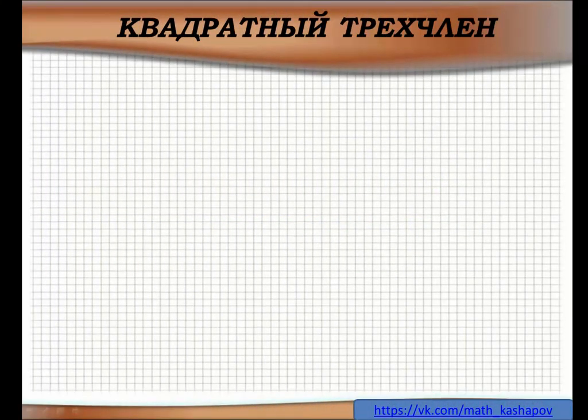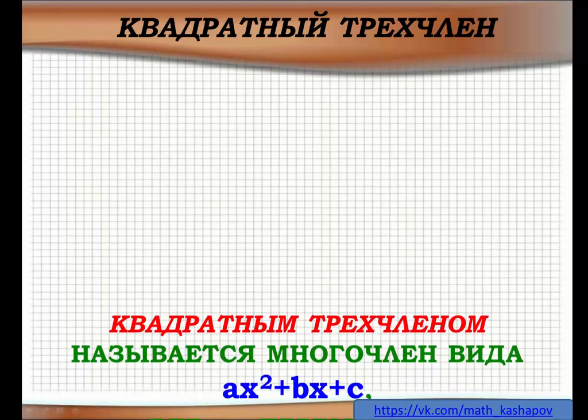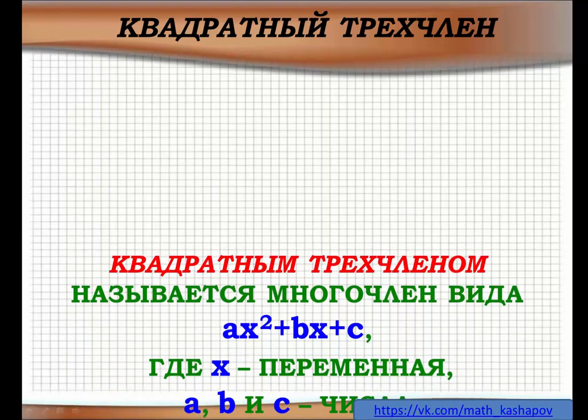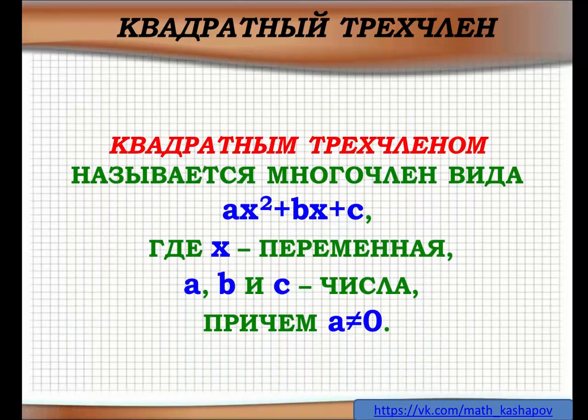Тема нашего урока — квадратный трёхчлен. Квадратным трёхчленом называется многочлен вида Ax² + bx + c, где x — переменная, a, b и c — числа, причём a ≠ 0.